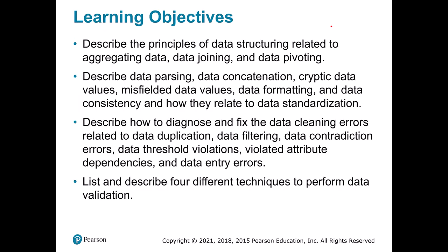The outcomes of this chapter include learning how to aggregate data, join data, and pivot data. We'll also talk about problems with parsing data and getting data in the right format, including concatenating or putting data together, fixing things in the wrong place, fixing formatting, making things consistent, and standardizing information. We'll also discuss how to diagnose problems of data duplication, filtering, contradiction, and other data entry errors.